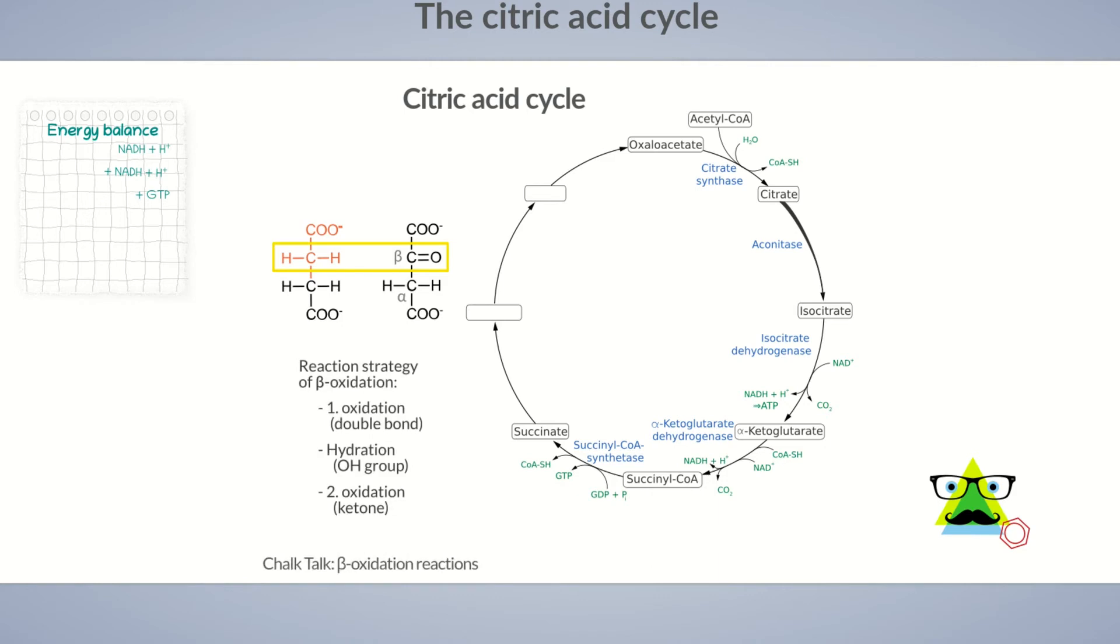Therefore, reaction step 6 leads to the formation of fumarate, which has a double bond. The reaction is catalyzed by succinate dehydrogenase. It transfers the electrons and protons released during the reaction to FAD and hereby to a protein of the electron transport chain. We don't want to go into too much detail now, but do take note of the enzyme succinate dehydrogenase. It's also termed complex II of the electron transport chain, which we'll look at further in the next episode. Let's add FADH2 to the energy balance.